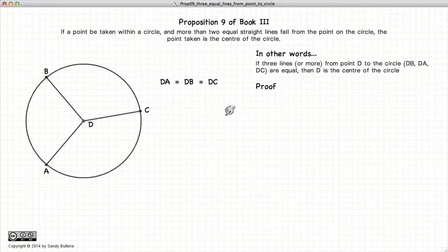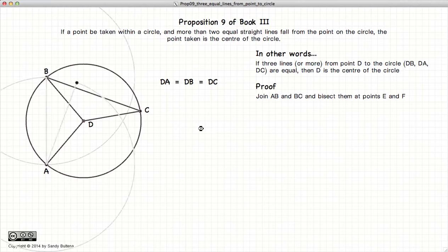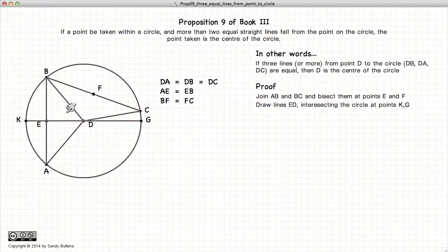So let's prove this. First we're going to draw a line from A to B and bisect it at point E, and draw a line from B to C and bisect it at point F. Now we draw the line from E to D and extend it so it intersects the circle at K and G.